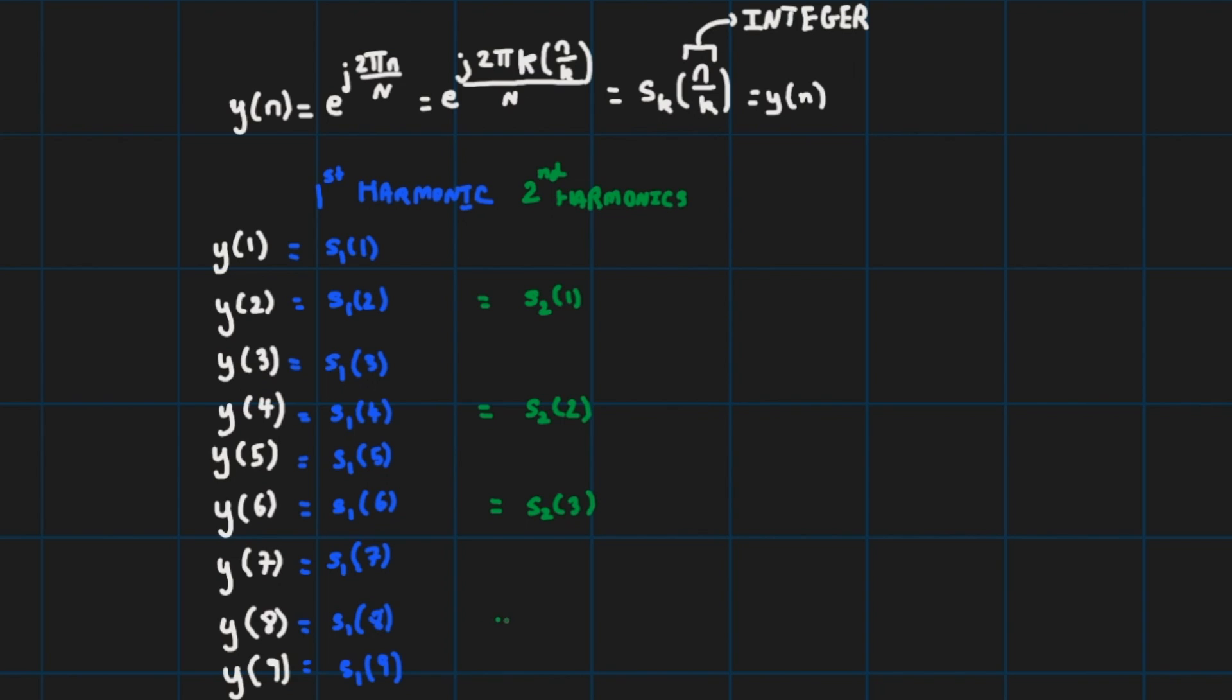Likewise my third harmonic, so I'll start my k here is 3 third harmonic, so n over 3 should be an integer. 1 over 3 is not an integer, 2 over 3 is not an integer but 3 over 3 is my s₃(1). Again so all multiples of 3, that is 6 is my s₃(2), 9 is my s₃(3) and so on.